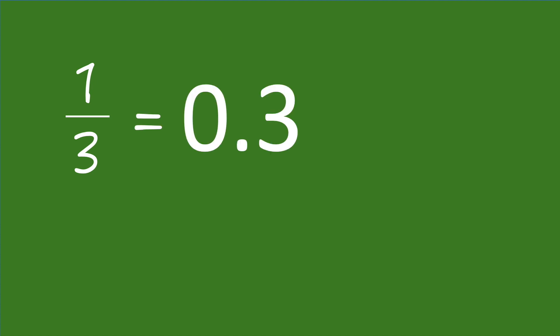And so as a decimal, a third becomes what's called a recurring decimal. That means that there's a sequence of digits that keeps repeating, because there's no equivalent fraction with a denominator that is ten, a hundred, a thousand, or some other power of ten.